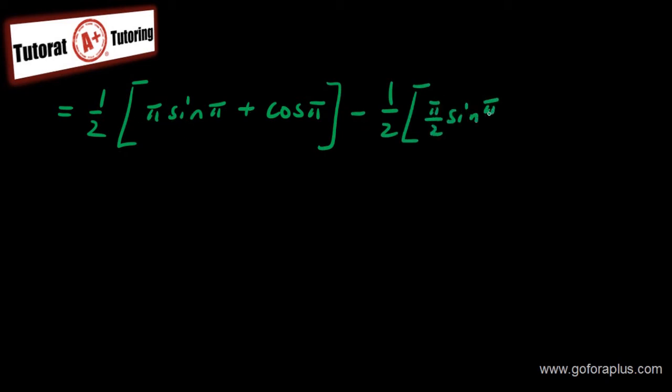So let's do that on the next page here. So this is going to be one half, pi sine of pi, minus or plus cos of pi. Subtract one half, plug in pi over 2 now. Pi over 2, sine of pi over 2 plus cos of pi over 2. So you have to evaluate this.